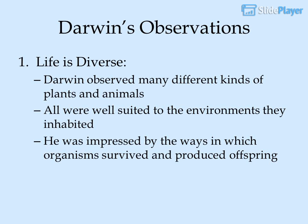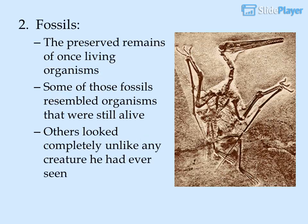Darwin's Observations — Life is Diverse: Darwin observed many different kinds of plants and animals, all well-suited to the environments they inhabited. He was impressed by the ways in which organisms survived and produced offspring. Fossils — the preserved remains of once-living organisms — also captured his attention.